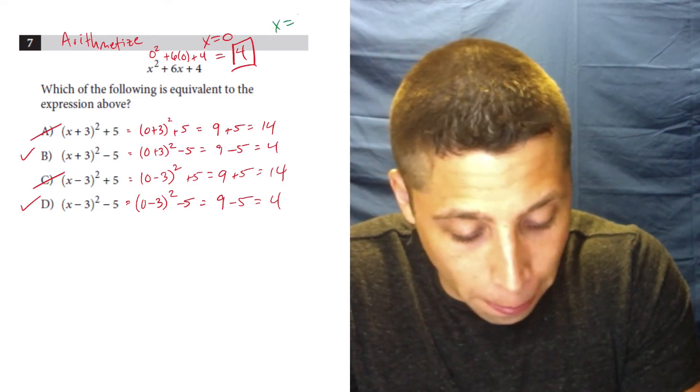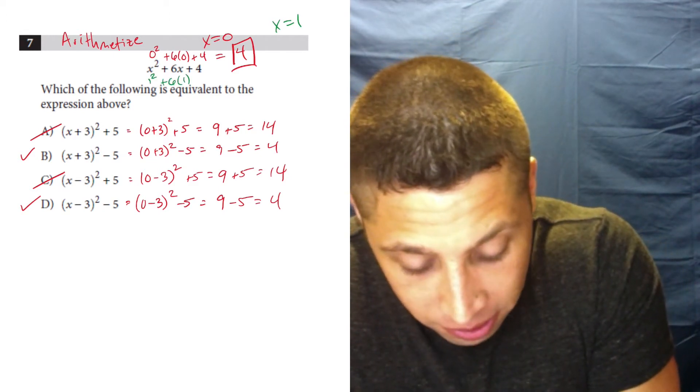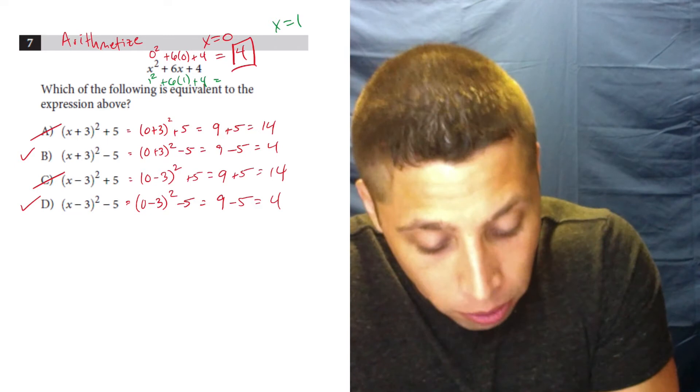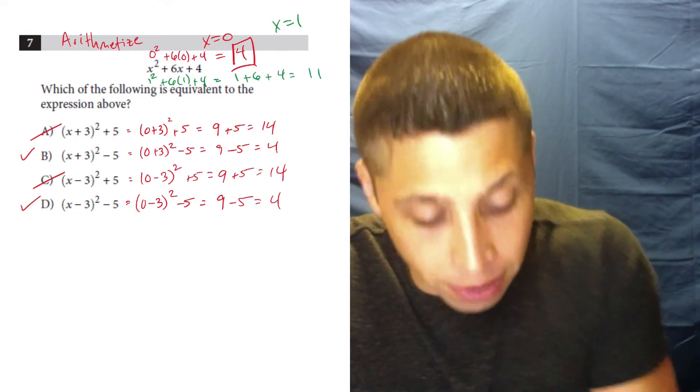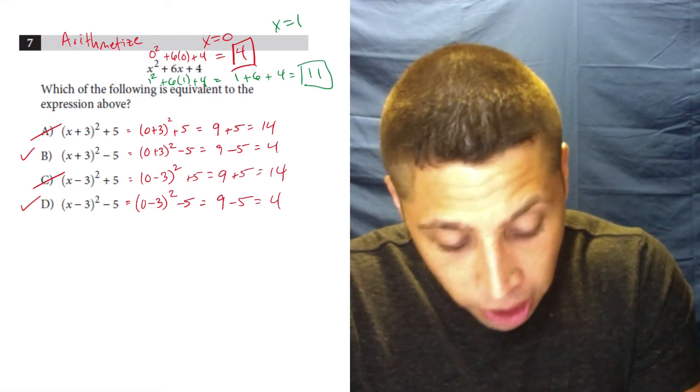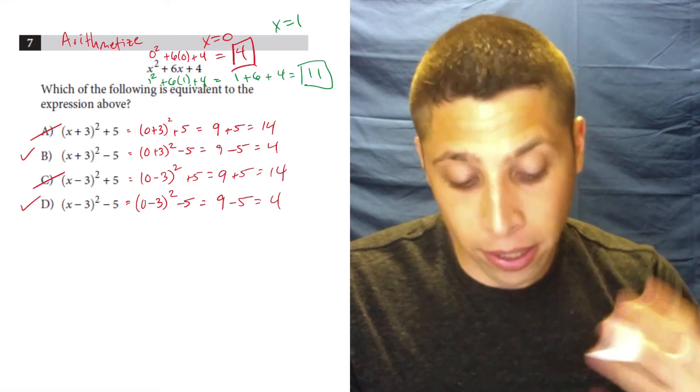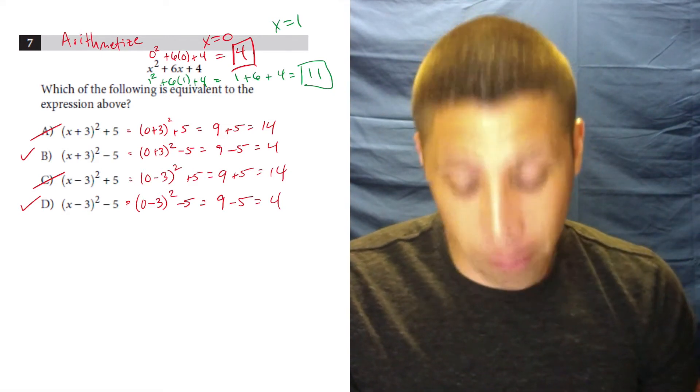How about x equals one? Because then I'm doing one squared plus six times one plus four. So that's one plus six plus four, which is 11. So now my number has changed, so now I'm plugging in one to the two answers that are left, and I'm seeing which one gives me 11.